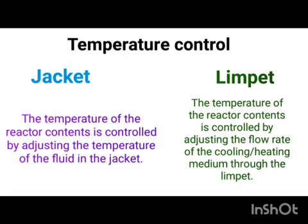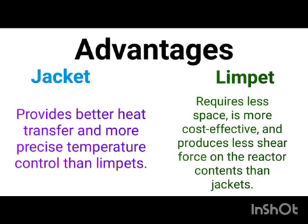About temperature control: in the case of a jacket, we can control the temperature of the reactor material by adjusting the temperature of the fluid inside the jacket. In the case of limpet, the temperature of the material inside the reactor is controlled by adjusting the flow rate of the cooling or heating medium flowing through it.